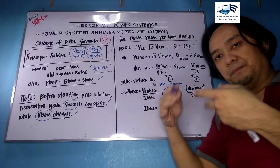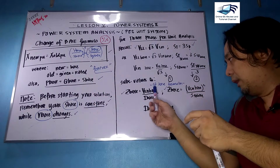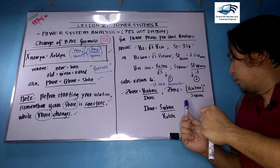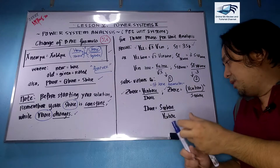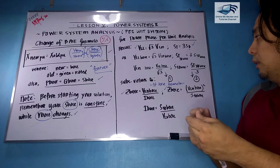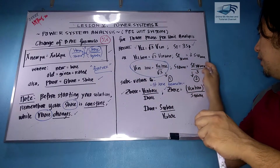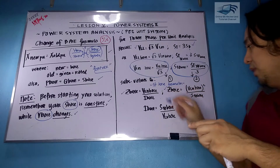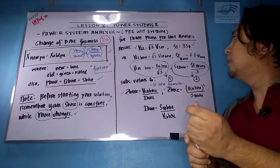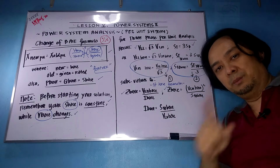From the previous slide, Z base equals V line-to-neutral over I base; Z base equals V line-to-neutral squared over S single-phase base; and I base equals S single-phase base over V line-to-neutral base. We substitute equations one and two respectively into these expressions, and on the next slide we will develop the three-phase per unit analysis formulas.